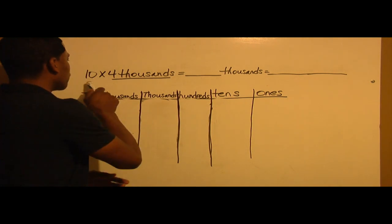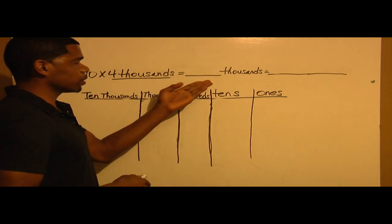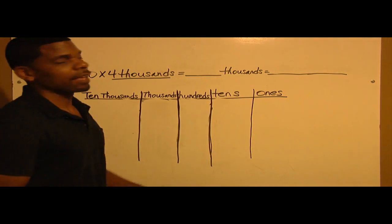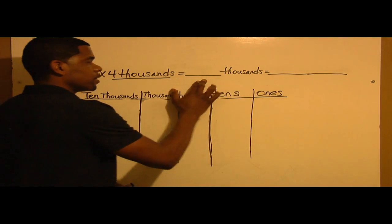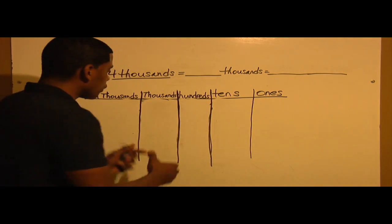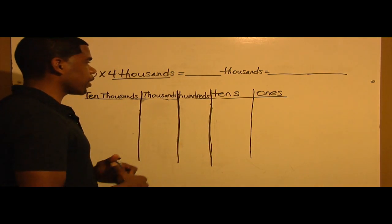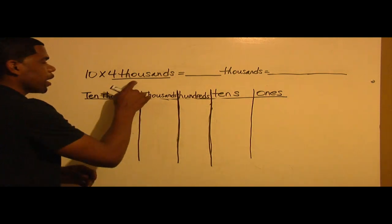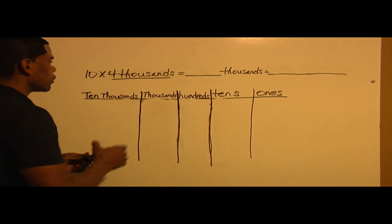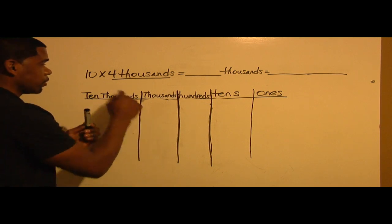Today's equation is 10 times 4,000 equals blank thousand equals blank. We need to find out these two areas. We're going to use the place value chart to answer this question. I have 4,000 underlined, so I have 4,000 in the place value of thousands.